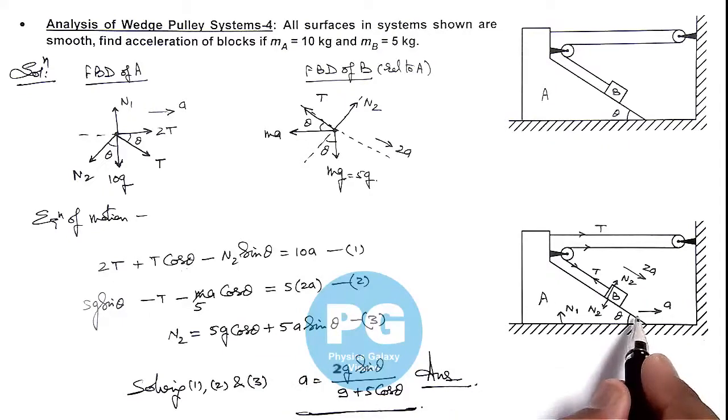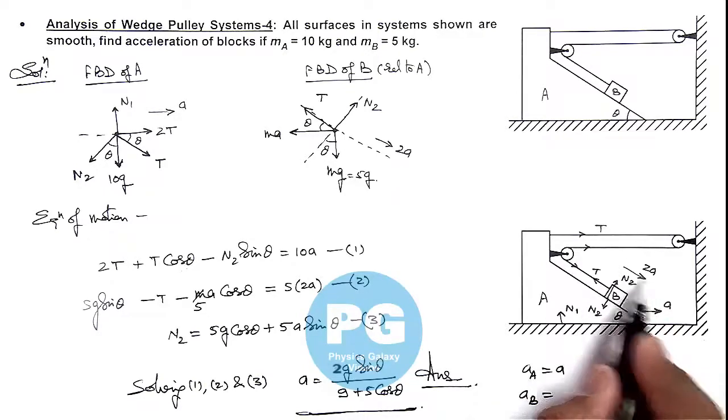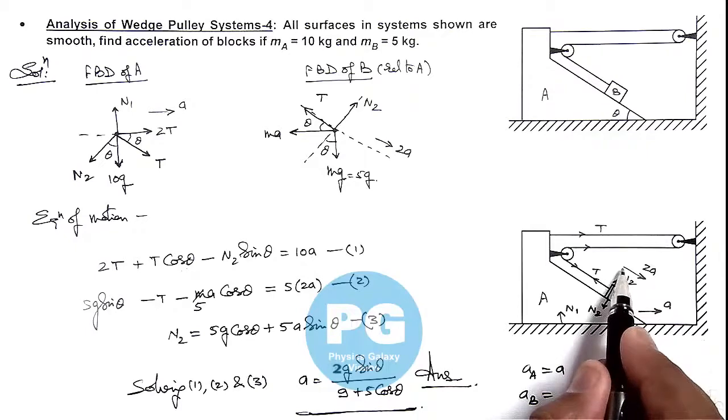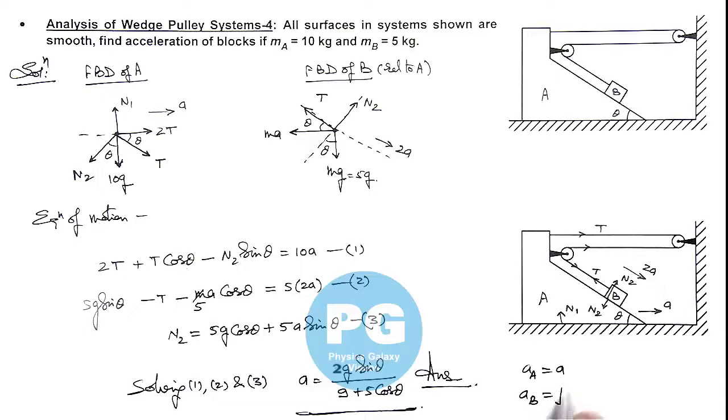Once you get the value of aA, you can calculate the acceleration of block A as aA and acceleration of block B as vector sum of aA and 2aA. So this 2aA is also having two components, one is horizontal in direction and other is vertical. So horizontal direction acceleration will be added up, so we can take the resultant of the two. So this will be aA plus 2aA cos theta whole square plus 2aA sin theta whole square, and you can verify the final result that will be the final accelerations of the blocks A and B.